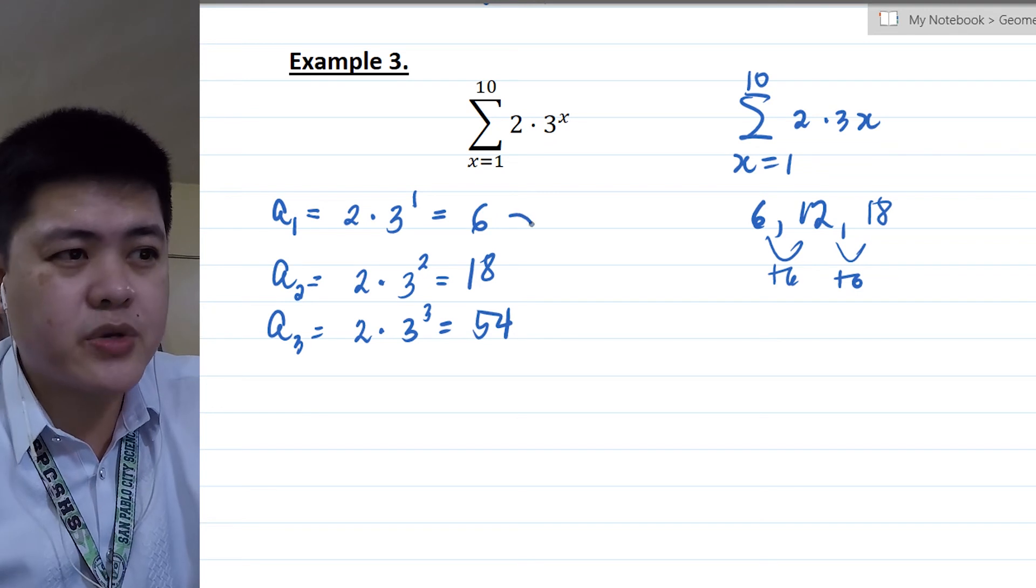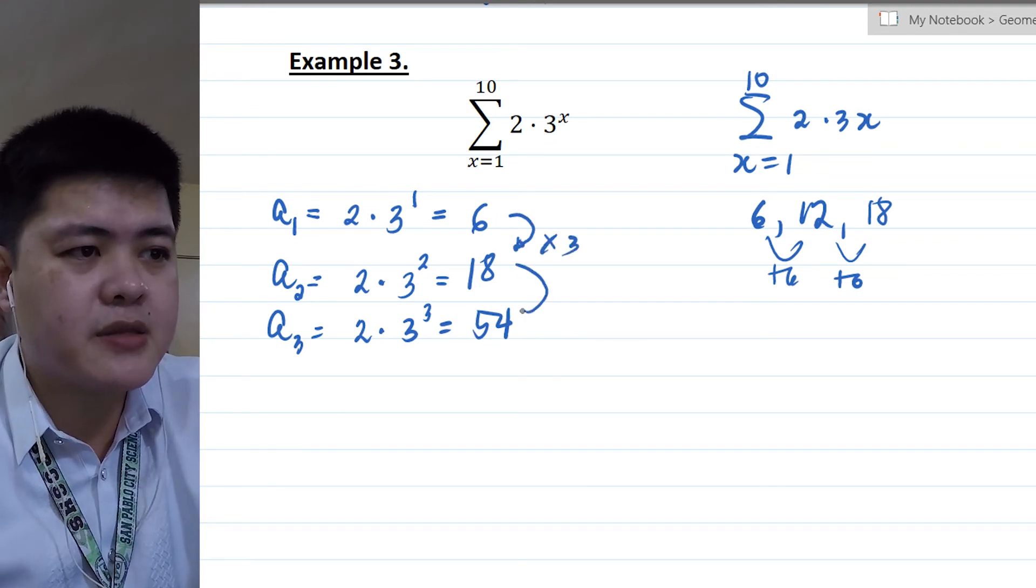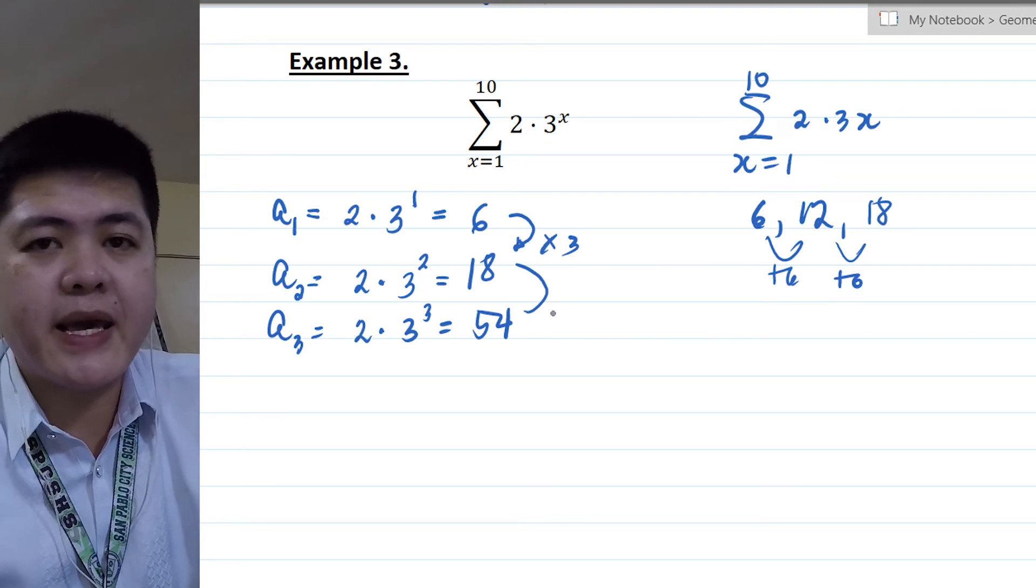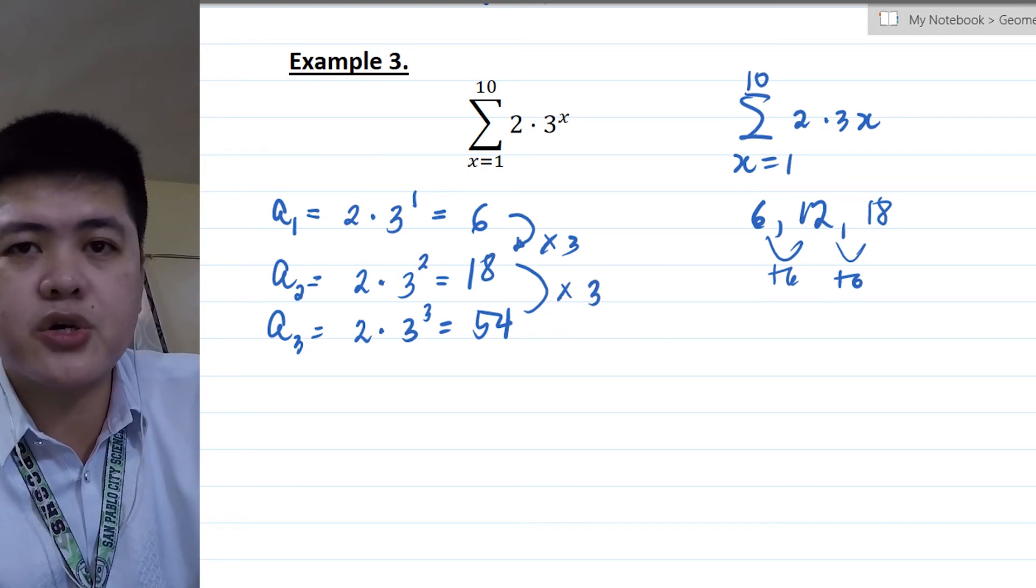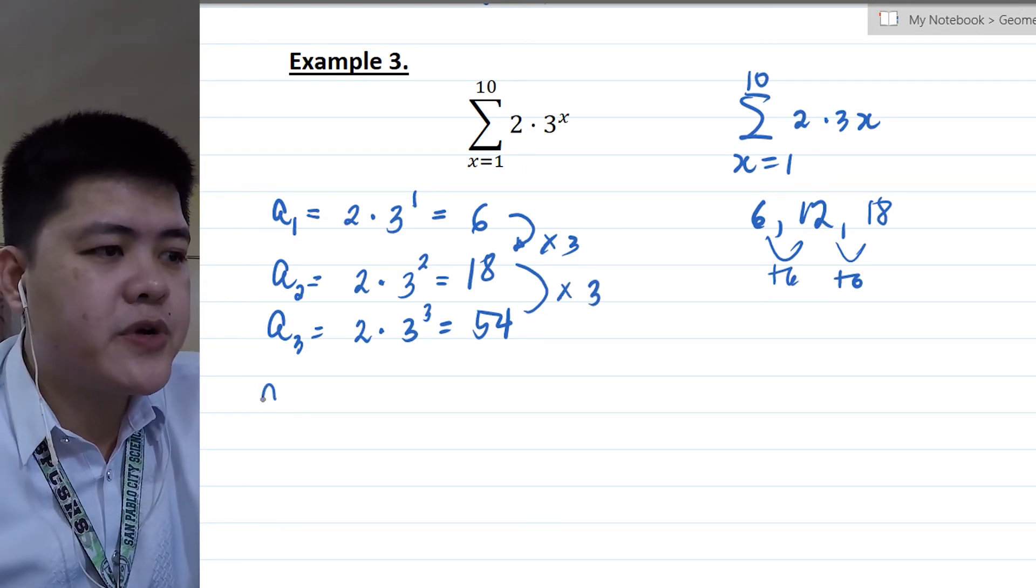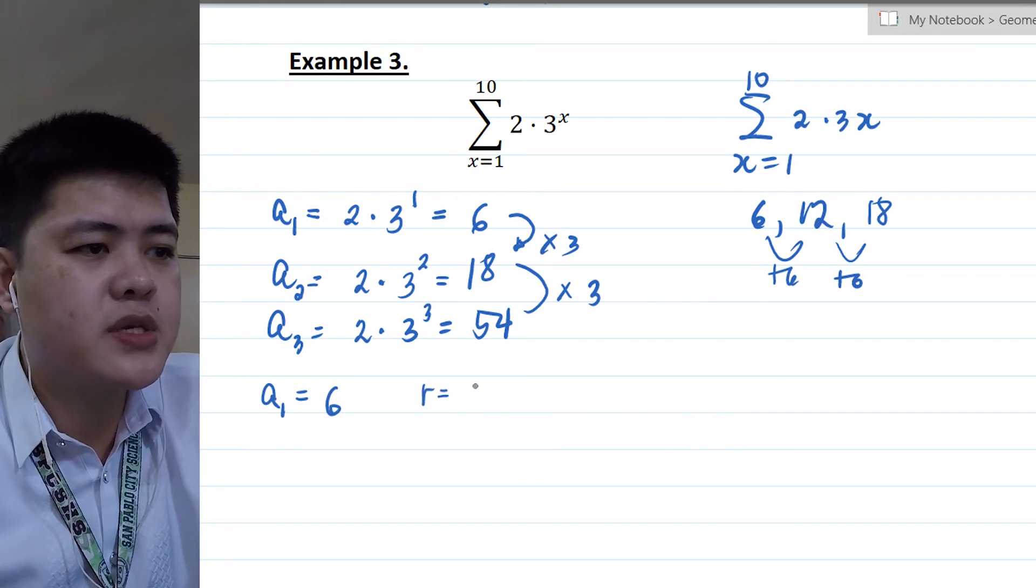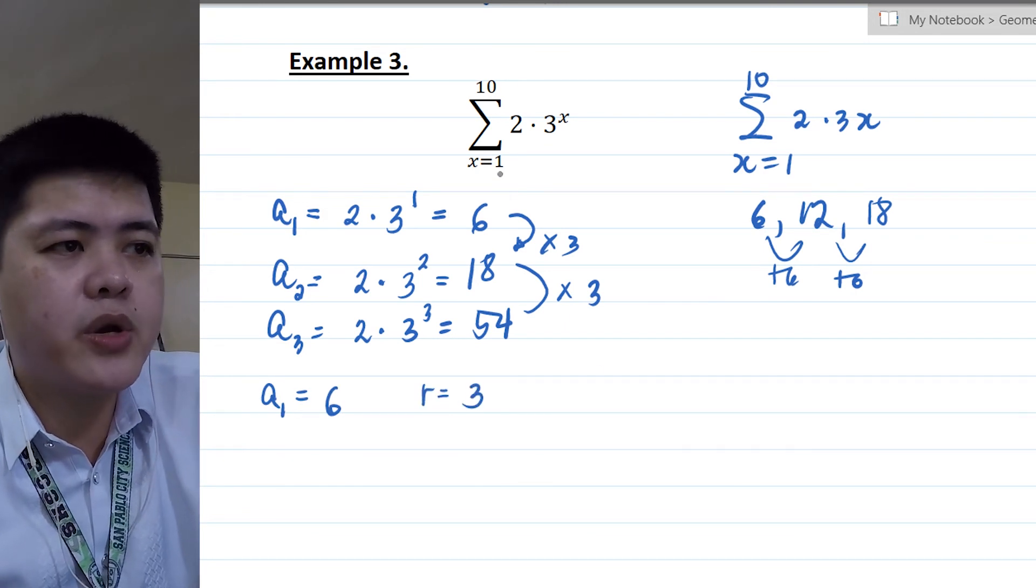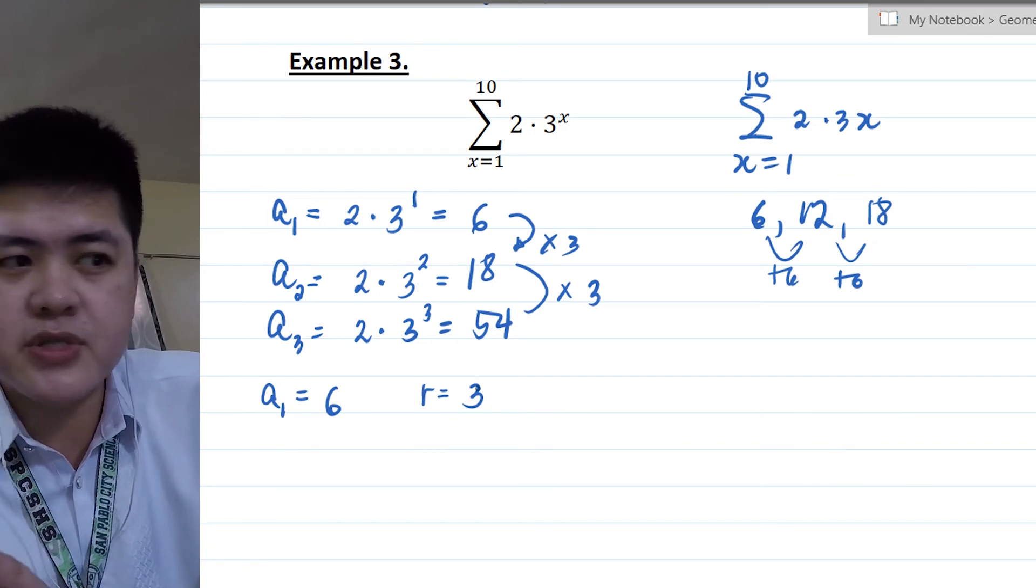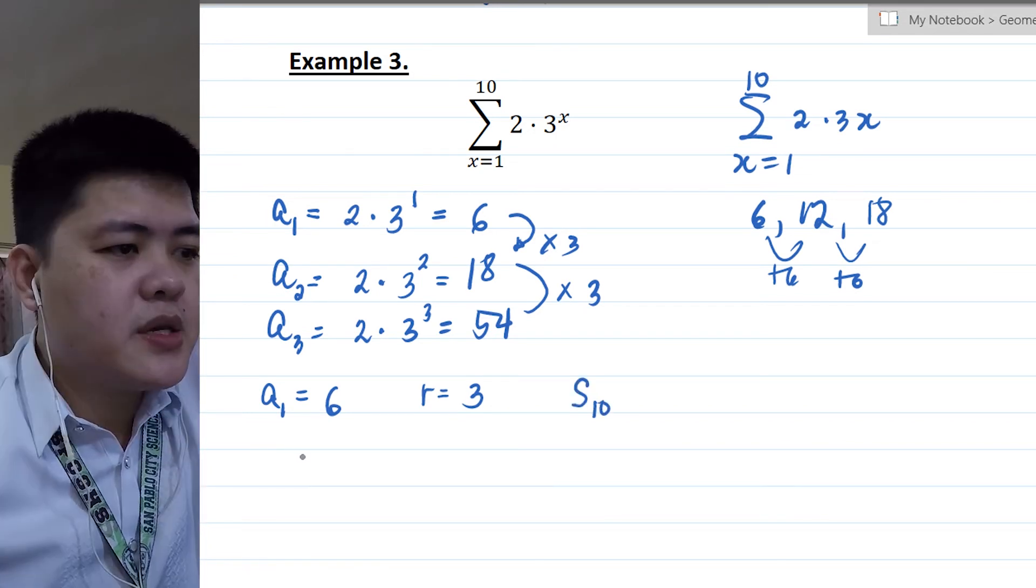So 6 to get to 18, you multiply it by 3. 18 to get to 54, you multiply it by 3 again. So your common ratio is 3. So your first term is 6 with common ratio equals 3. And we're going to look for the first 10 terms. So we're looking for S sub 10.